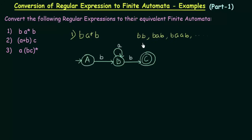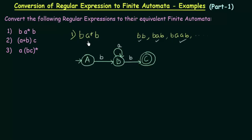Let us check if these strings are accepted by this finite automata. For BB: starting from A, with b it comes to state B, with the next b it comes to state C which is the final state — accepted. For BAB: again comes to the final state — accepted. For BAAB: B, A, A, B — comes to the final state again — accepted. We have successfully designed the finite automata for the regular expression B A star B.